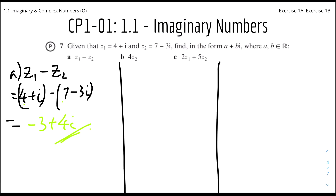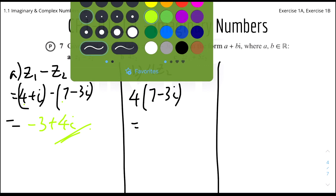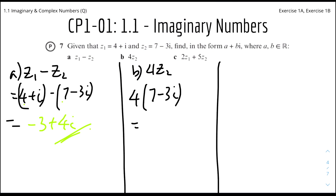For part 2, 4z2: that's 4 times (7 minus 3i). Simple multiplication gives 4 times 7 equals 28, and 4 times 3 equals 12, so the answer is 28 minus 12i.